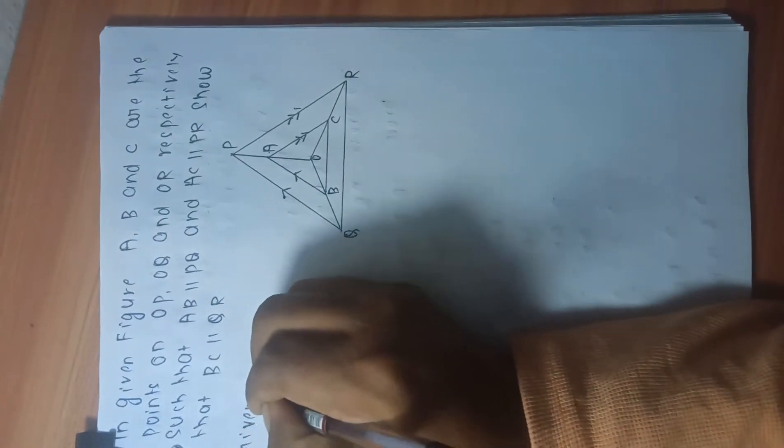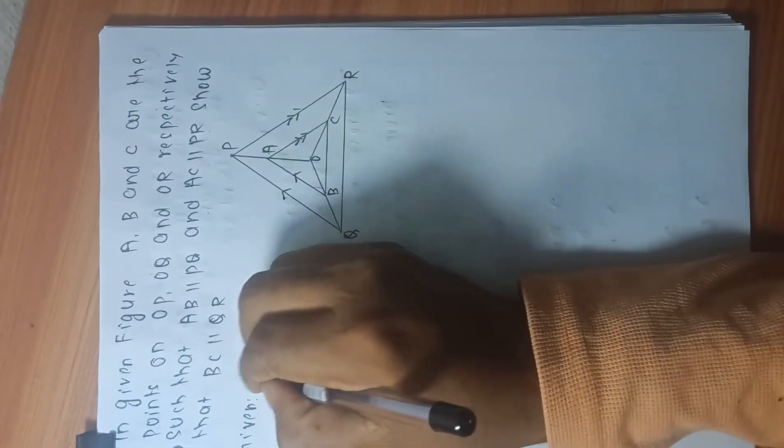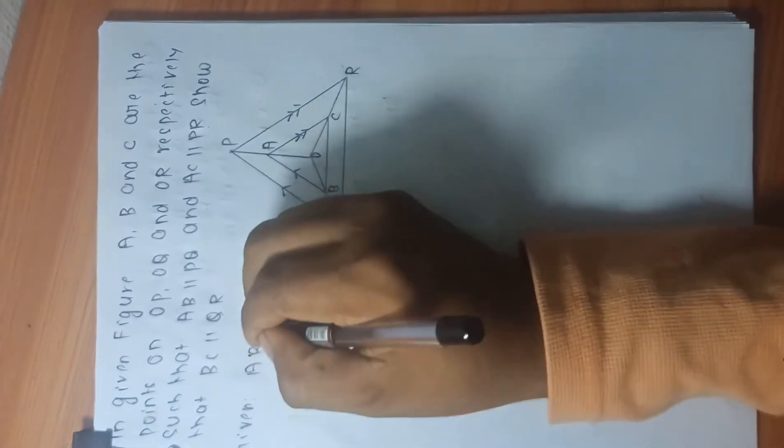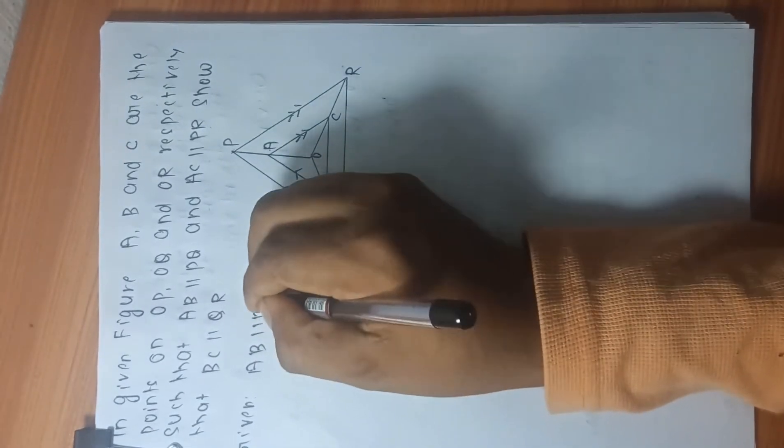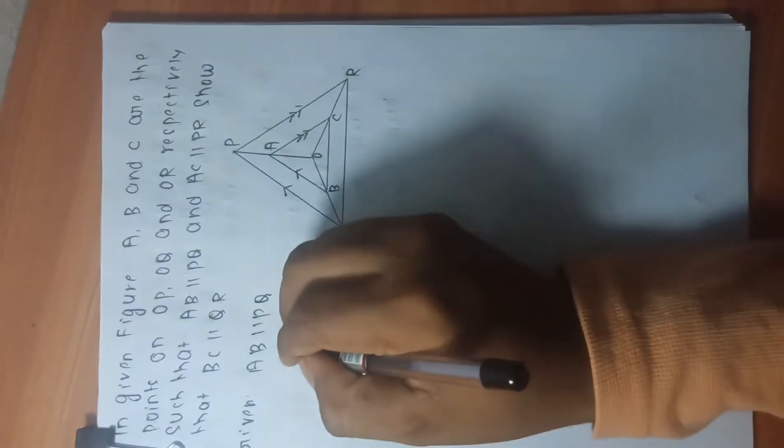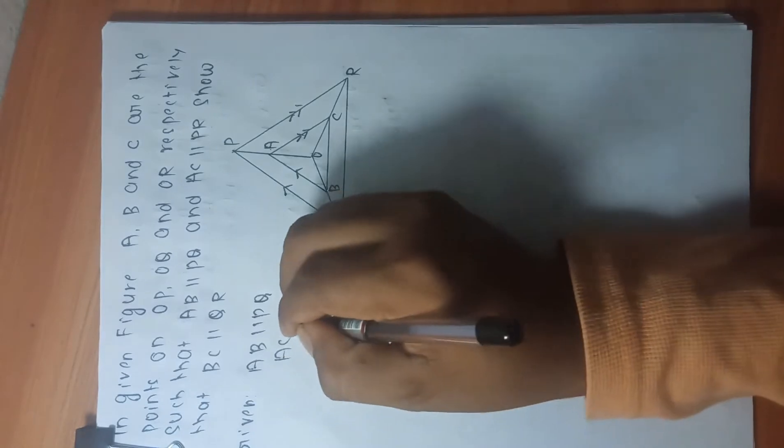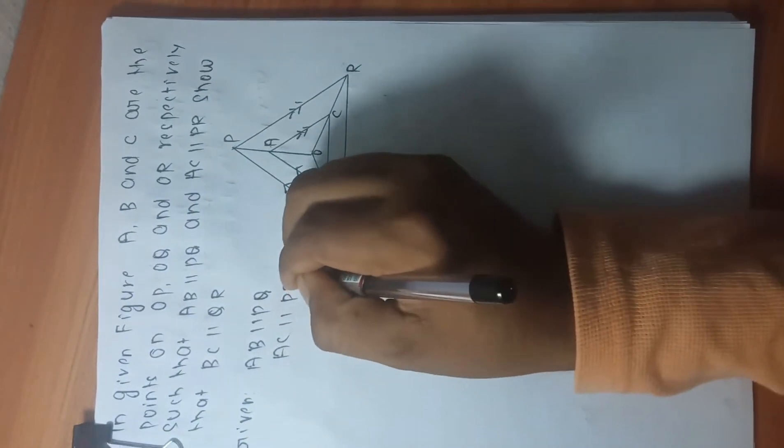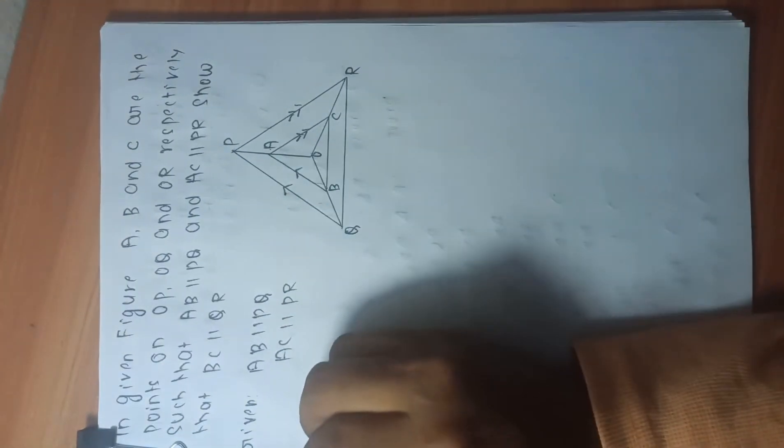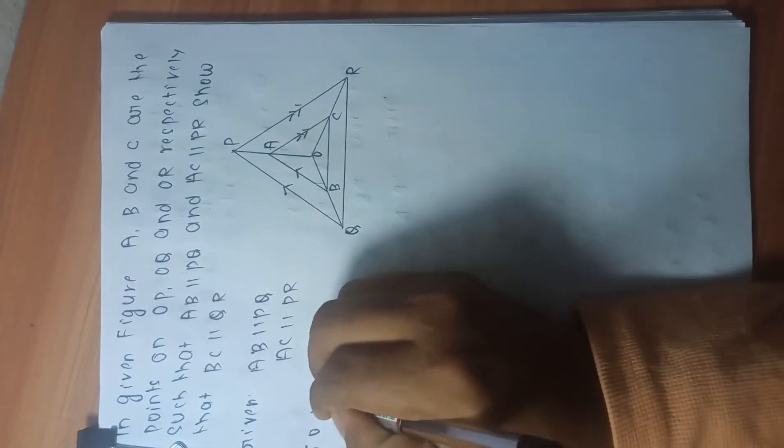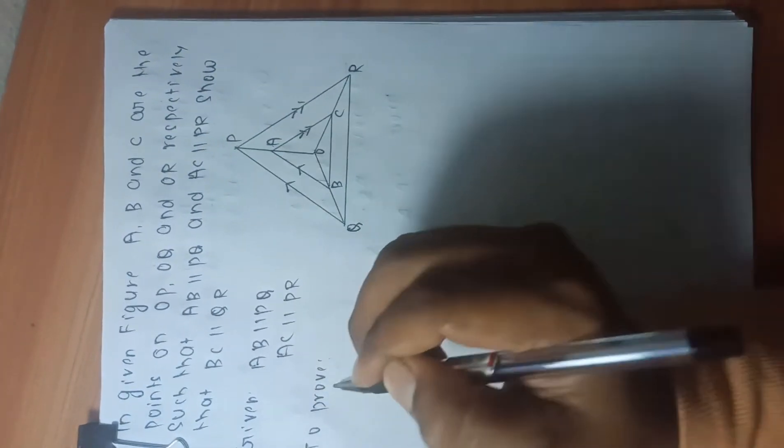Given: AB is parallel to PQ, AC is parallel to PR. To prove: BC is parallel to QR. First of all we will take triangle OPQ.